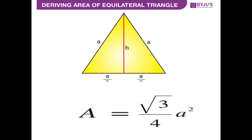The area of an equilateral triangle uses the formula: root 3 by 4 into A squared. To understand why, the triangle is divided into two equal parts, making each half base equal to A by 2. Using the Pythagorean theorem — since dividing the base creates a 90-degree angle — we can find the height and derive the formula: area equals root 3 by 4 into A squared.